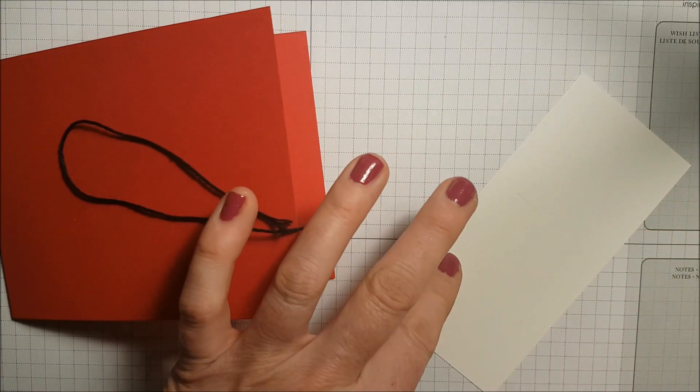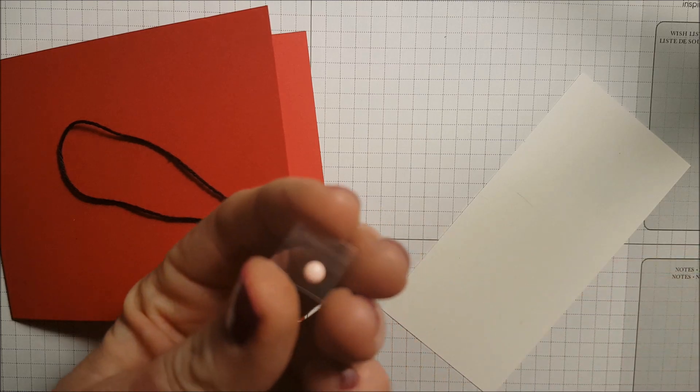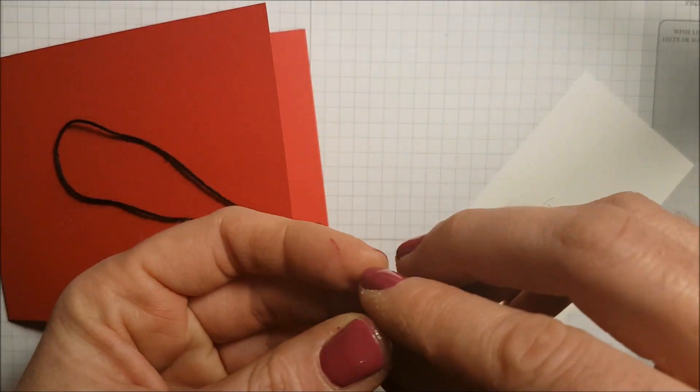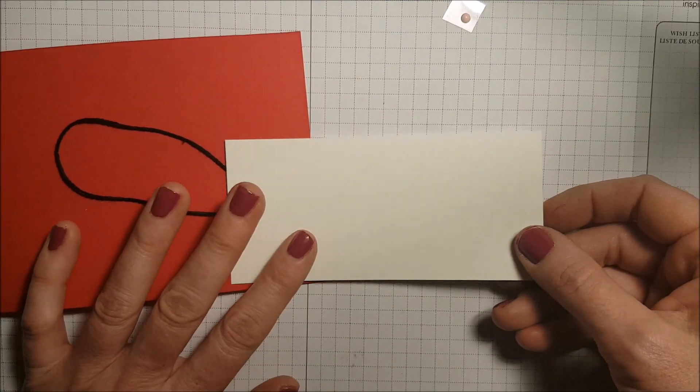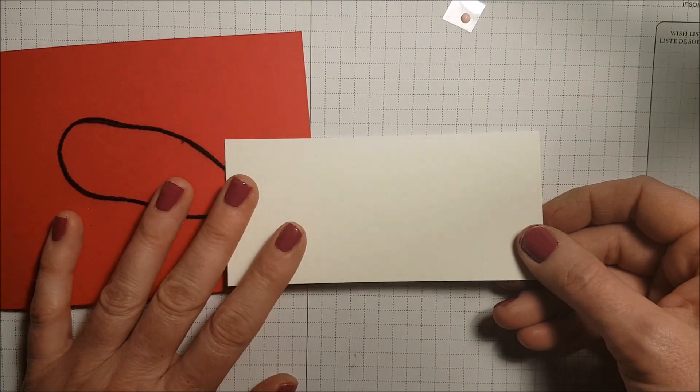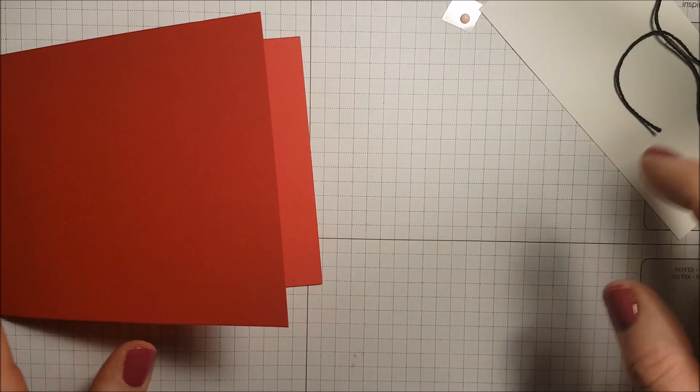There's a piece of basic black twine, a little tiny powder pink embellishment, and a piece of whisper white that measures two and a half by five and a quarter. So you don't need a lot of supplies to make this card.